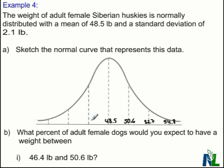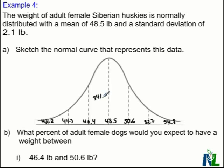I'll work backward in the same fashion. Subtracting 2.1 from 48.5 gives me 46.4. The next step gives 44.3, and the one after that gives 42.2. Along with that, I should label my percentages on my diagram. Since this diagram isn't provided on assessments, it's important that you recall or remember these percentages.